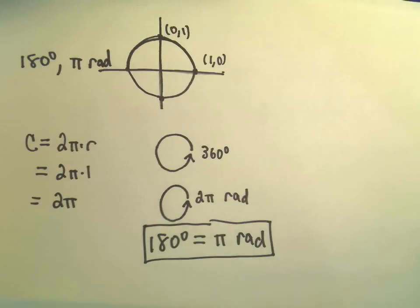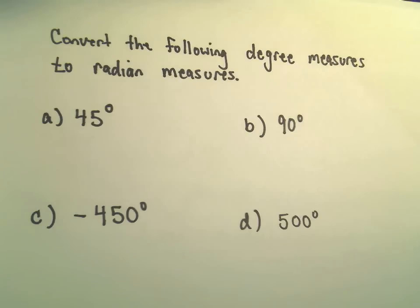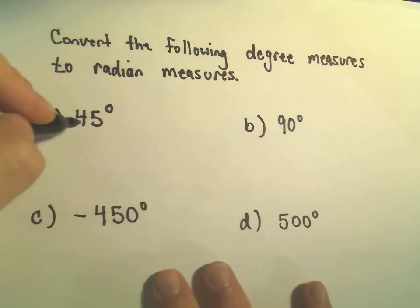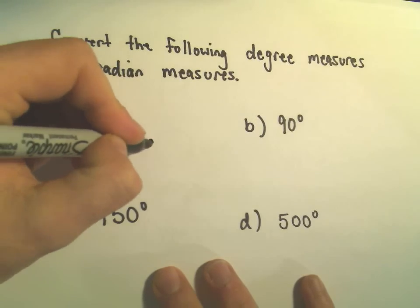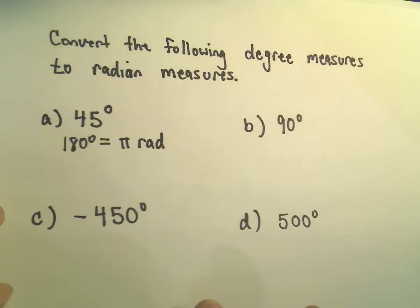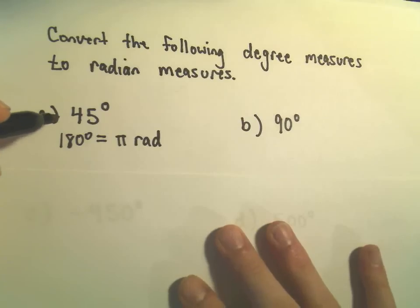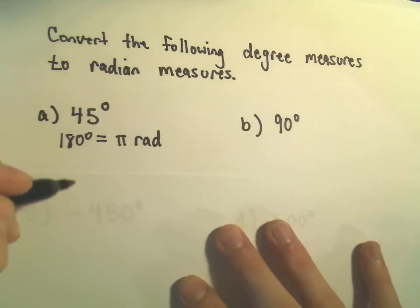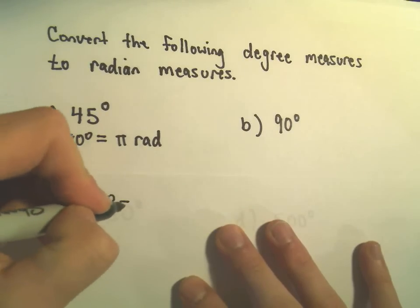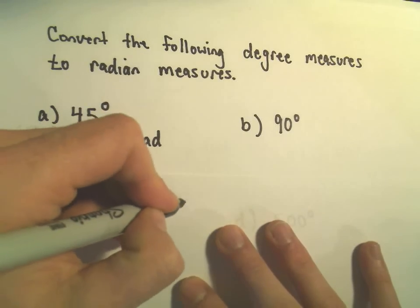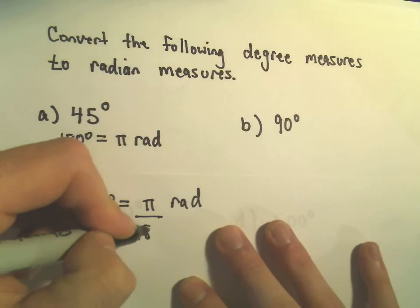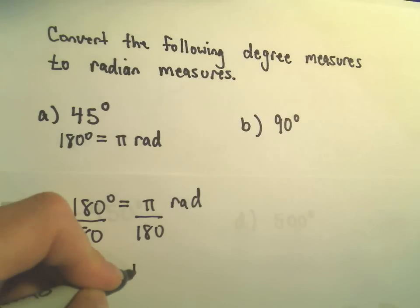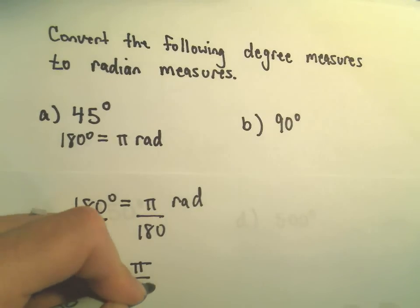So we're going to convert each of the following degrees into radians. So let's start here with 45 degrees. So I basically think, 180 degrees, that's equivalent to pi radians. And maybe in this case, if you're good with arithmetic, maybe you can think 180 divided by what is 45. But if you're not sure about that, the way I always do it is I'll first simply make this into 1 degree. And to do that, I'll simply divide both sides by 180.